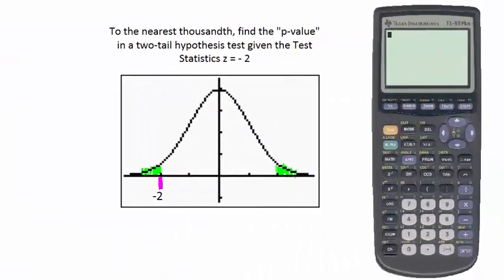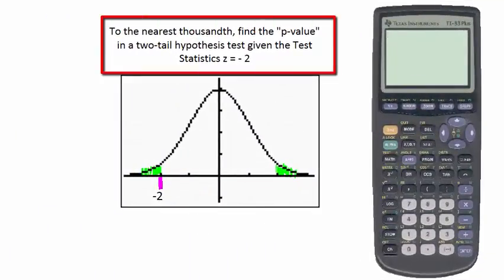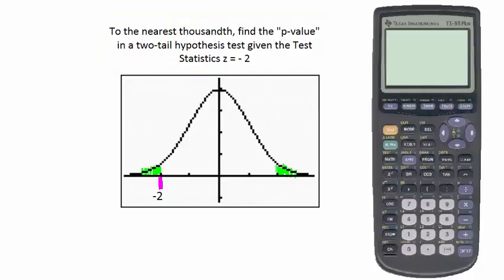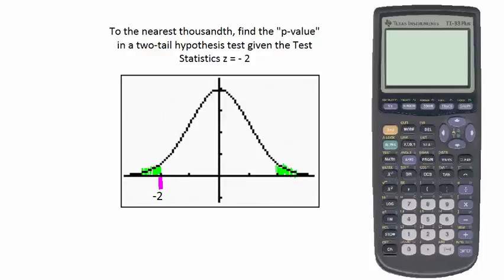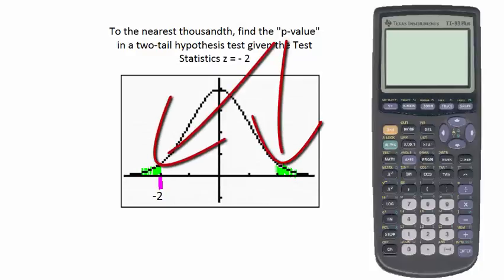Another closely related problem asks us to find the p-value in a two-tailed hypothesis test given a test statistic of negative 2. The key difference here is that after finding the area under the normal curve to the left of negative 2, that area must be doubled, because a two-tailed hypothesis test is performed in both tails. The p-value is represented by the two green areas under the normal curve.